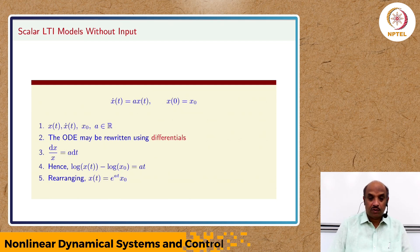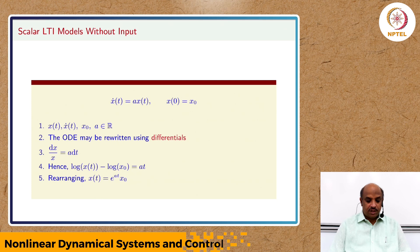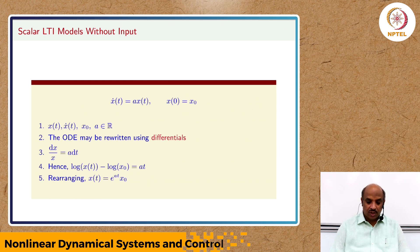Simplifying and rearranging, we get x(t) = e^(at)·x(0). At this point we can check if this function satisfies the equation. First check: at t = 0, do we get back x(0)? Yes. Second check: if we take the time derivative, do we get x_dot = a·x(t)? You can easily confirm that x(t) = e^(at)·x(0) indeed satisfies the differential equation. We call such functions that satisfy these equations solutions.